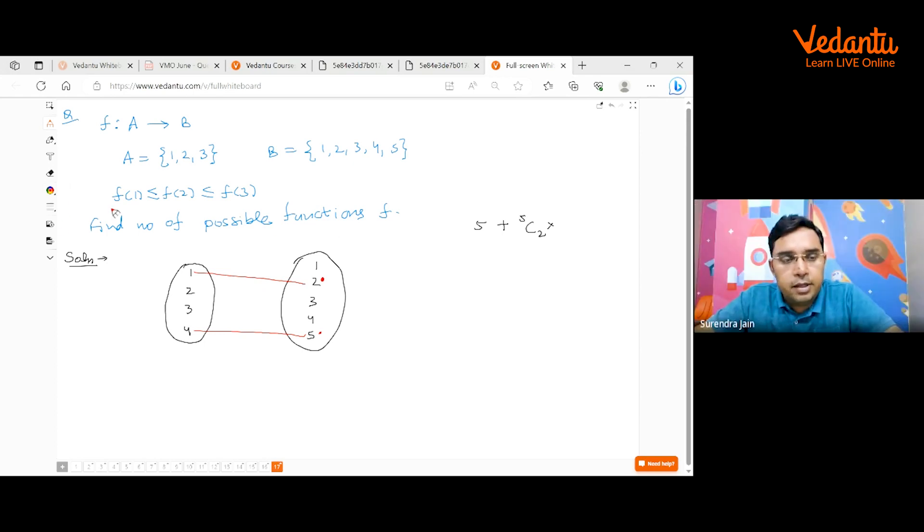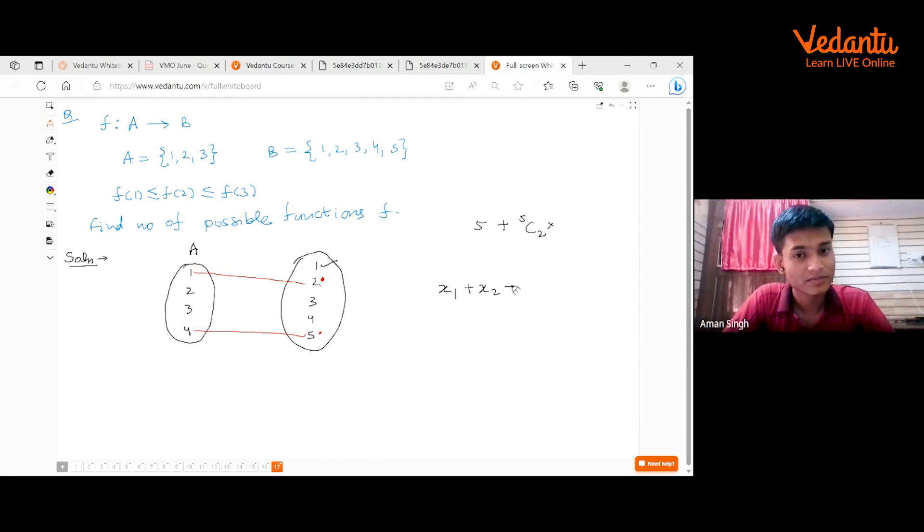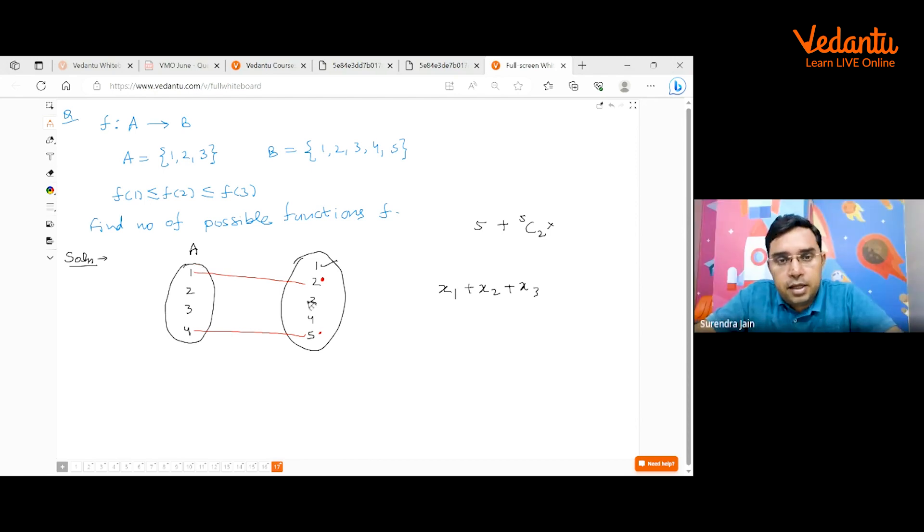I will tell you one direct method. I think you should learn how this kind of question can be done. Suppose my element here, one, is connected to x₁ element of A. That means one is having x₁ pre-images. Plus x₂. Two is having x₂ number of pre-images. Then x₃, three is having x₃ number of pre-images, x₄ and x₅.